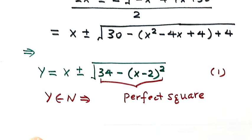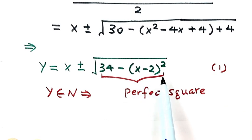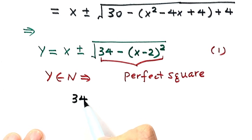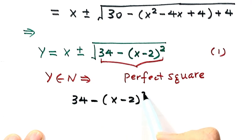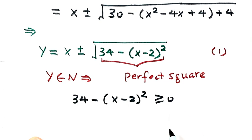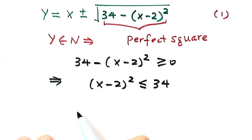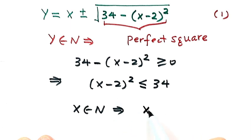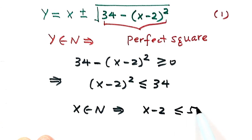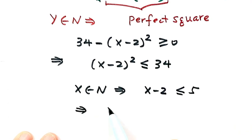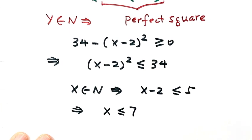First, since the part under the square root must be greater than or equal to zero, that means 34 − (x − 2)² ≥ 0, so (x − 2)² ≤ 34. Because x is a positive integer and 6² = 36, x − 2 must be less than 6, meaning x − 2 ≤ 5, so x ≤ 7. We've now narrowed down the range of x.